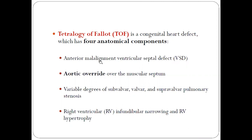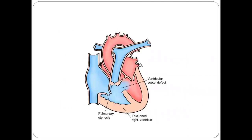The main defect in tetralogy of Fallot is anterior malalignment of the ventricular septal defect. There is malalignment of the infundibular part of the septum — this interventricular septum moves anteriorly and thus can cause pulmonary stenosis, blocking the RVOT.